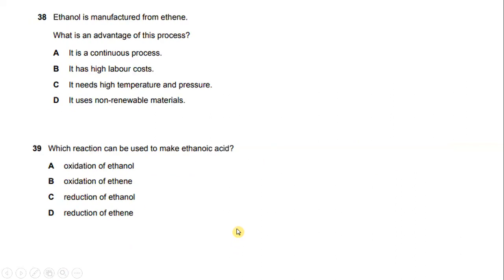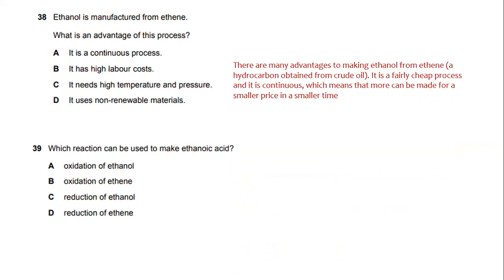Ethanol is manufactured from ethene. What is the advantage of this process? There are many advantages to making ethanol from ethene, a hydrocarbon obtained from crude oil. It is a fairly cheap process and it is continuous, which means that ethanol can be made for a smaller price in a smaller time. So the answer will be: it is a continuous process.